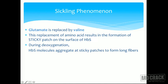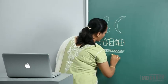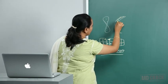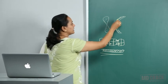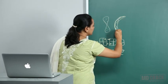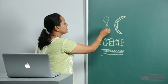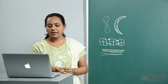During deoxygenation, the HbS molecules aggregate via the sticky patches to form long fibers. Normally hemoglobin is evenly distributed within a red blood cell, but when it forms long fibers, it distorts the shape of the RBC, resulting in the formation of the sickle cell. This sickle shape is caused by long fibrils of polymerized HbS molecules.